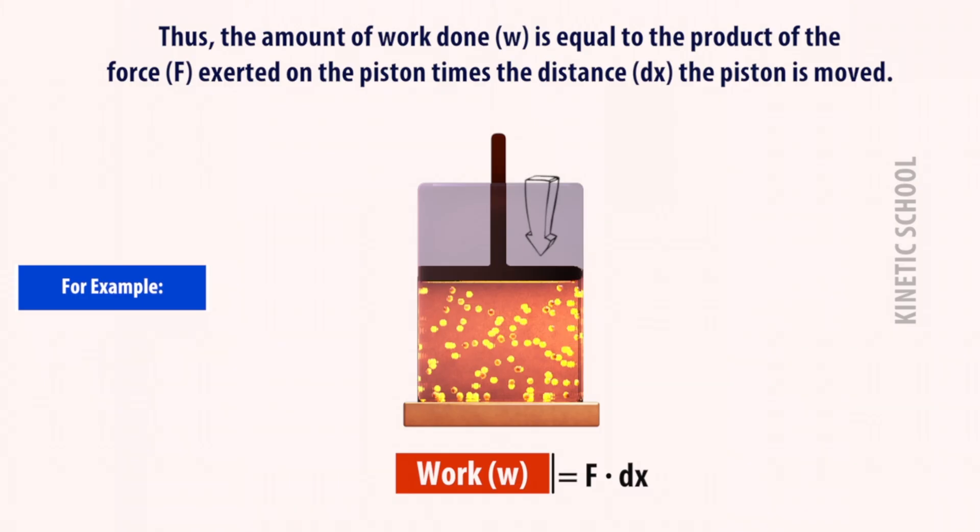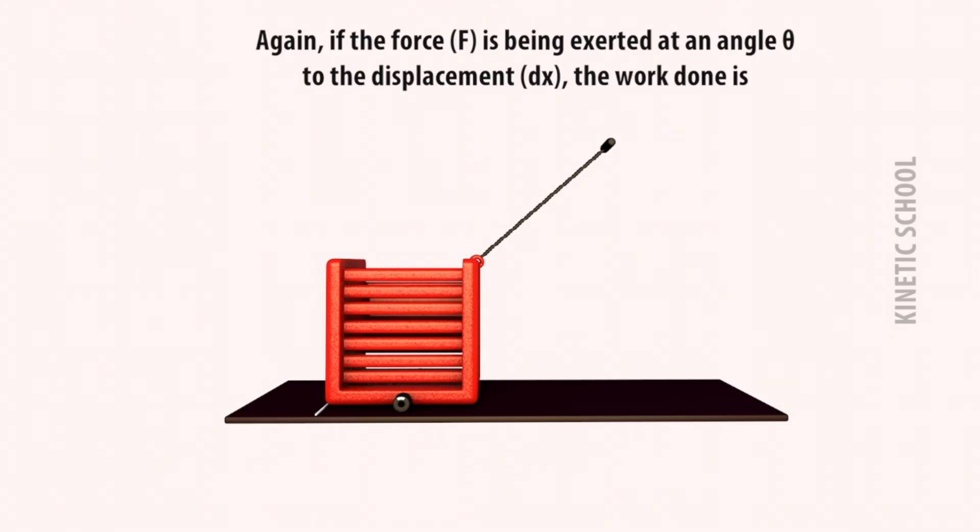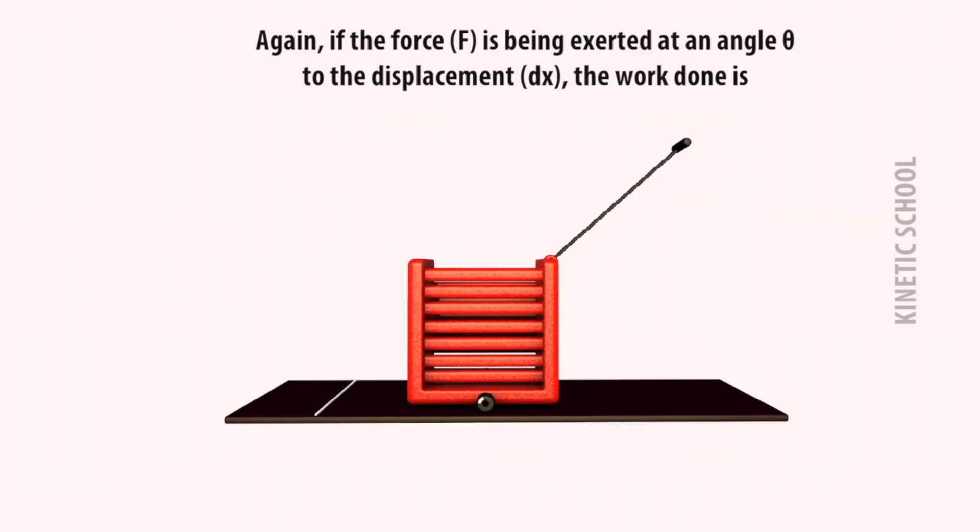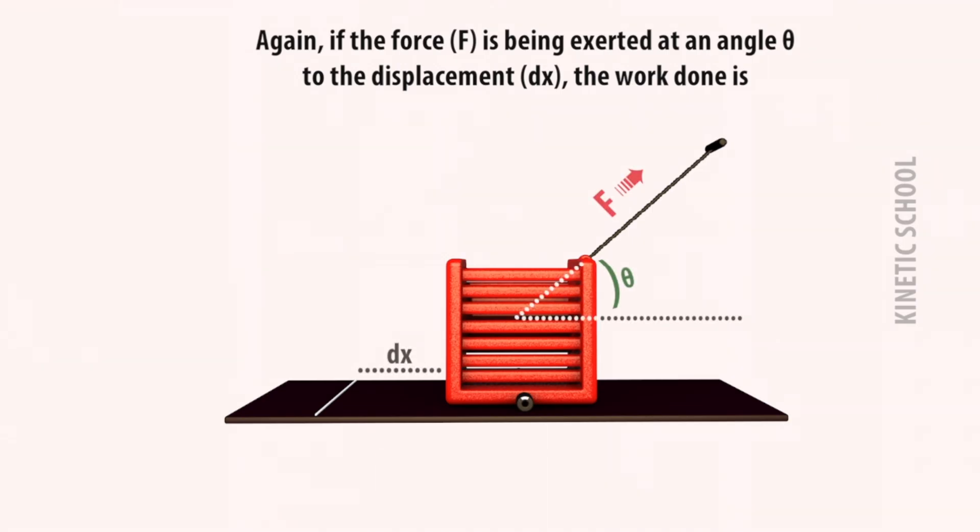Therefore W = F × dx. Again, if the force is being exerted at an angle theta to the displacement, the work done is W = F × dx × cos theta.